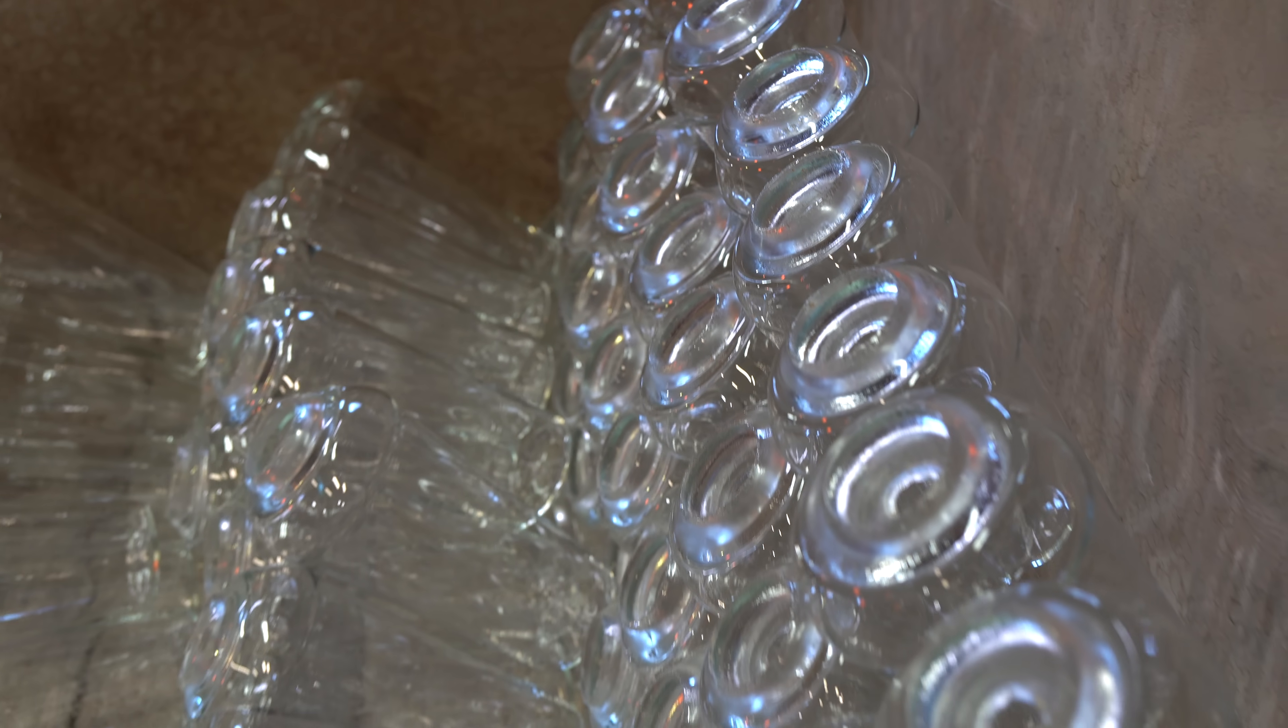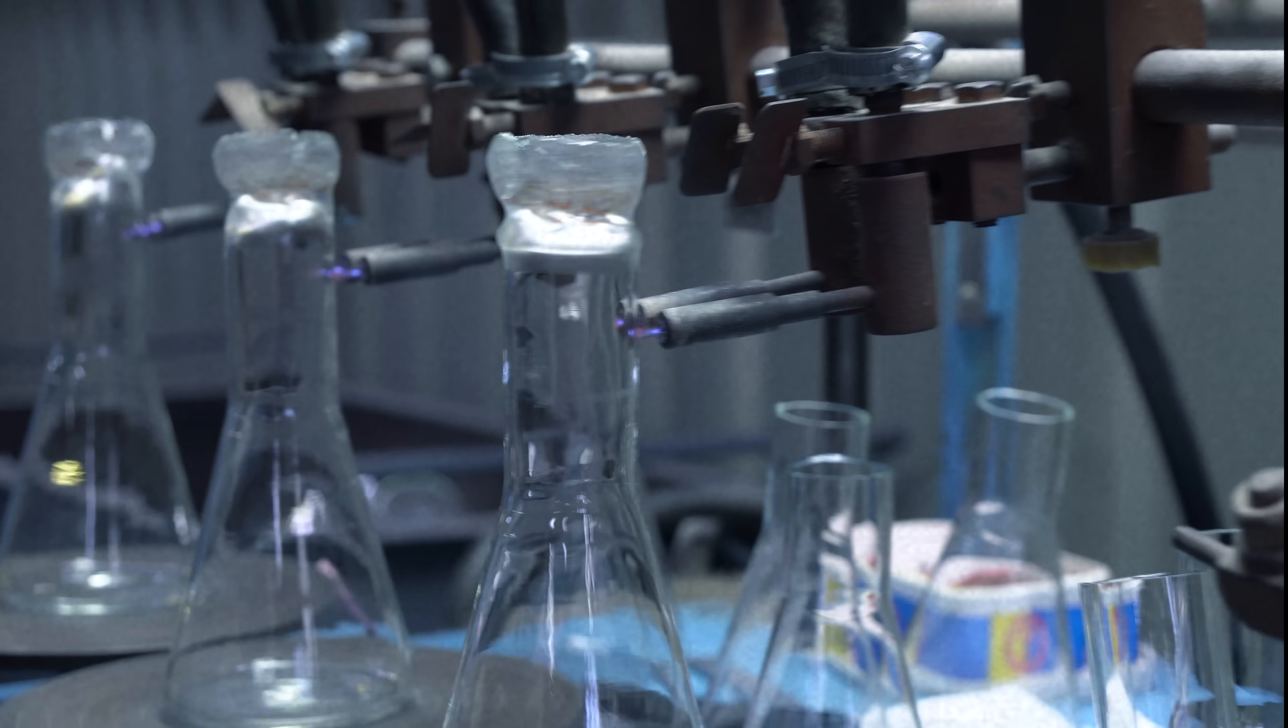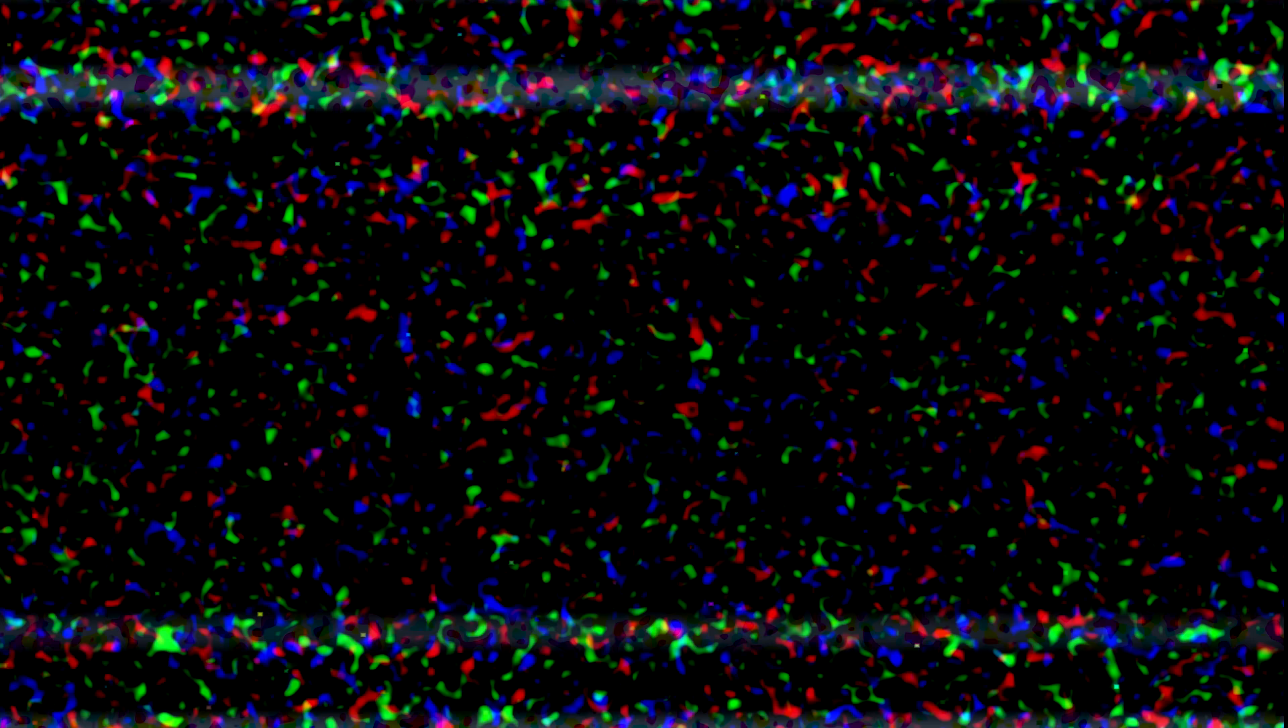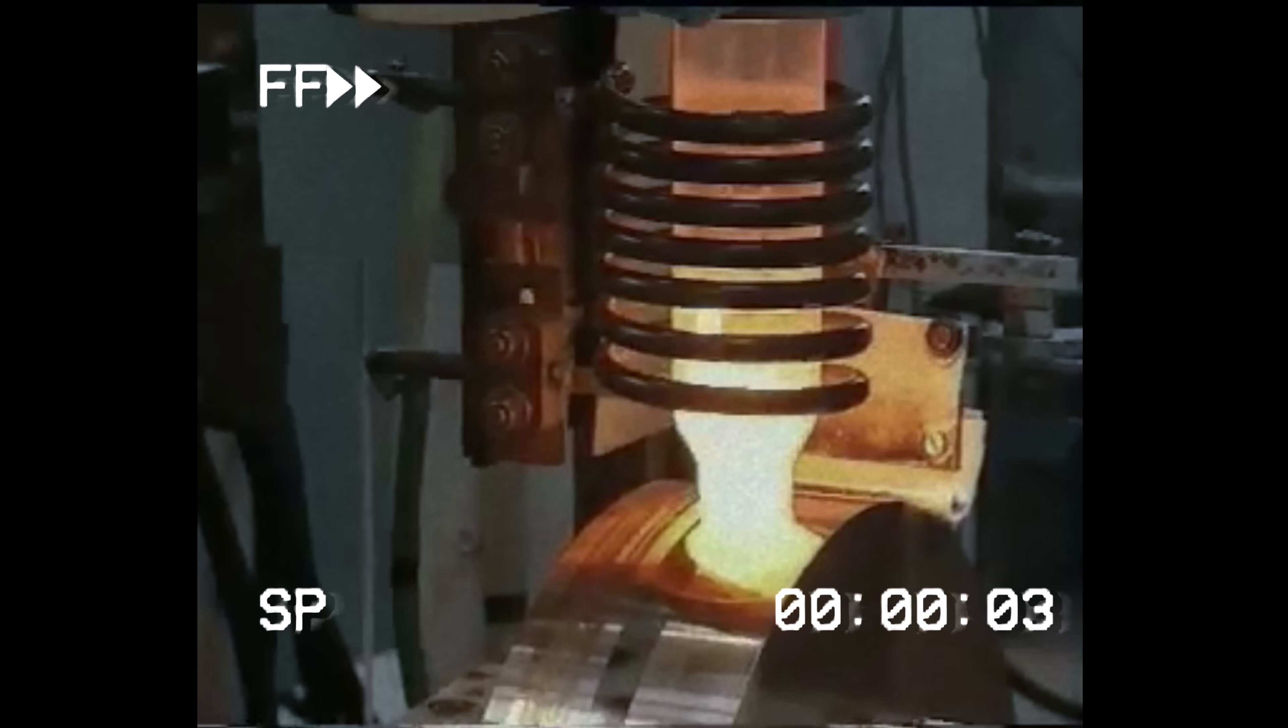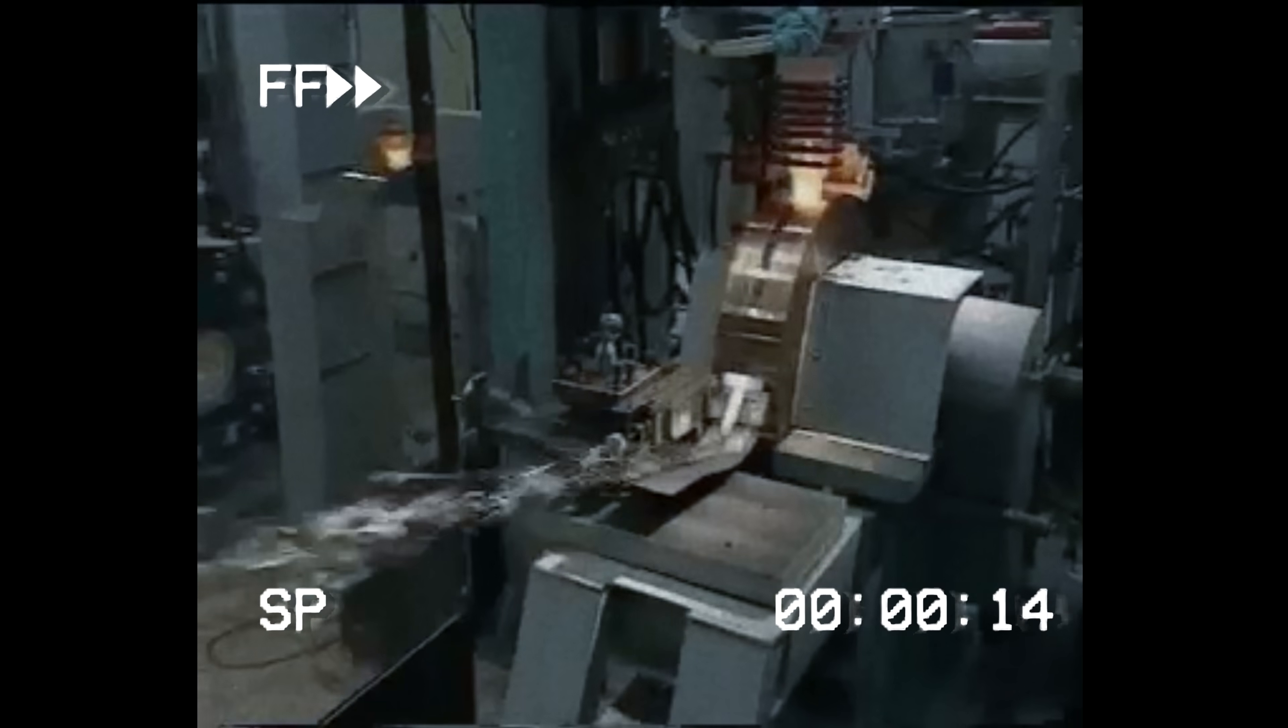Besides making transparent glass, it is also possible to make metallic glass of the same amorphous structure. To make it, a mixture of metals needs to be melted in an induction oven, and the alloy is poured into a cool rotating copper wheel, where the metal immediately solidifies, creating a long strip of metallic glass.